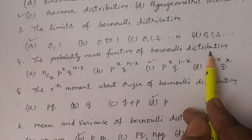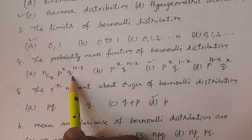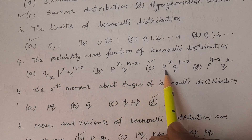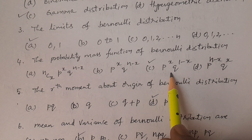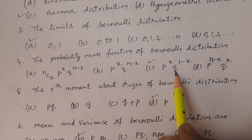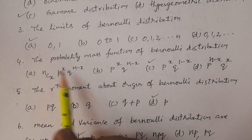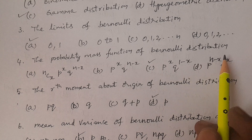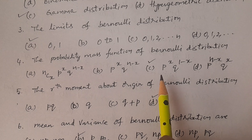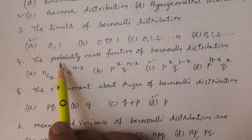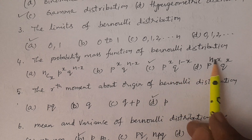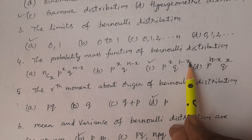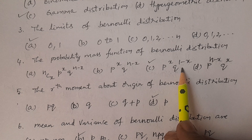Question number four: What is the probability mass function of Bernoulli distribution? Options: A. nCx * p^x * q^(n-x), B. p^x * q^(n-x), C. p^x * q^(1-x), D. p^(n-x) * q^x. The answer is option C: p^x * q^(1-x), where x takes the values 0 and 1. Option A is the binomial distribution PMF, not Bernoulli.